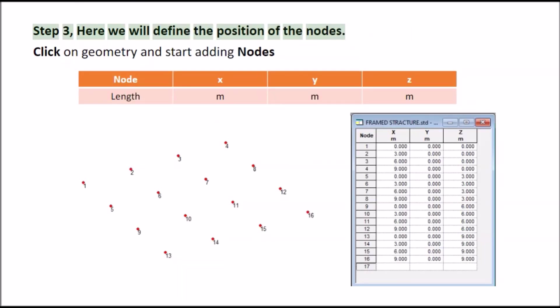Step 3, here we will define the position of the nodes. Click on geometry and start adding nodes. Node X Y Z length M M M.